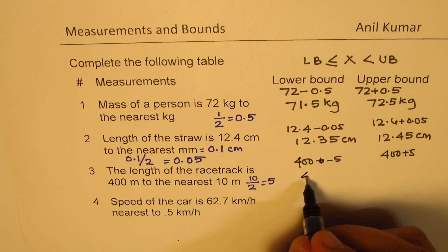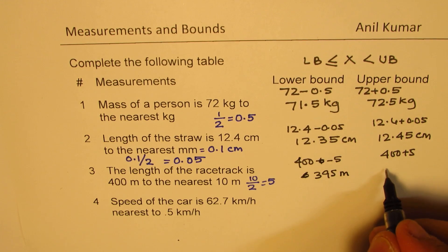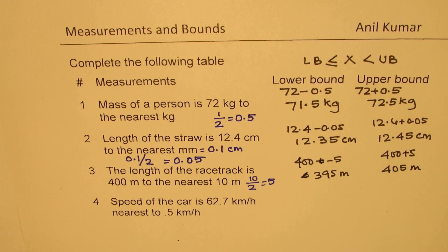And therefore, the lower bound will be 395 meters, and the upper bound will be 405 meters. Is that clear to you, right?